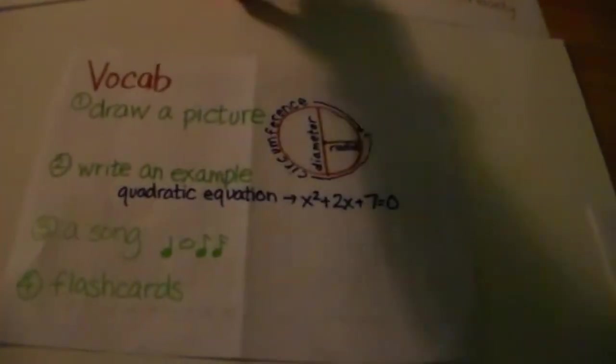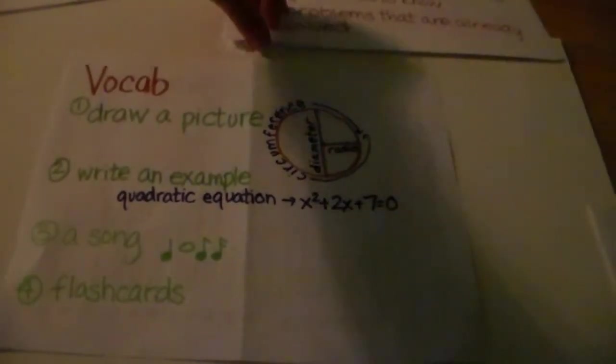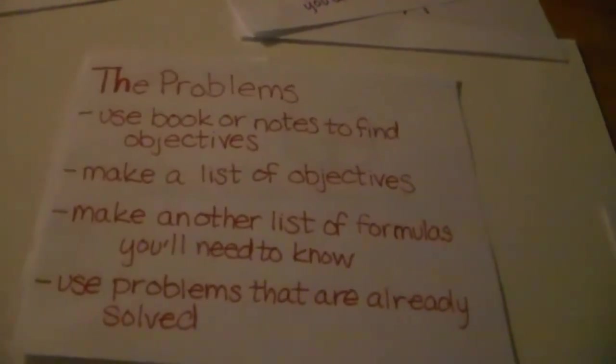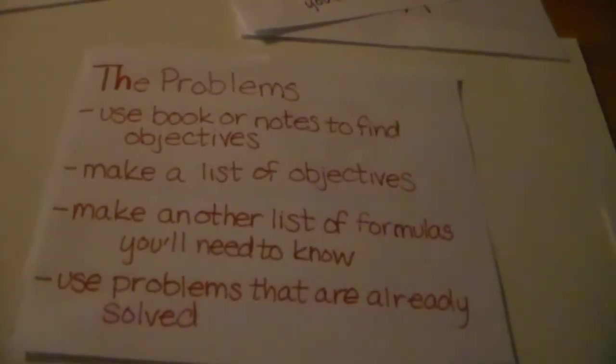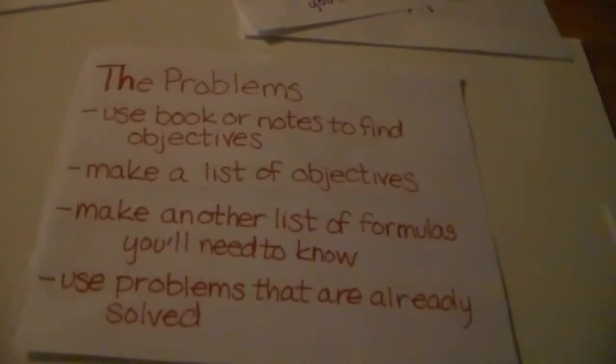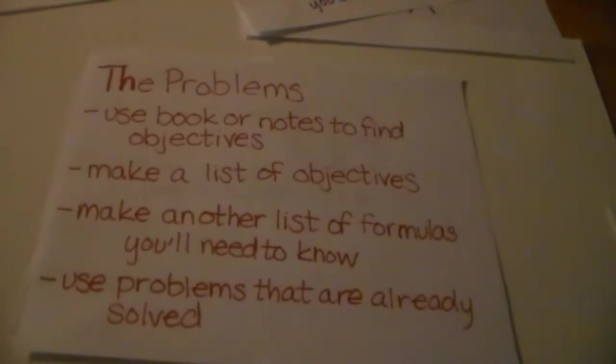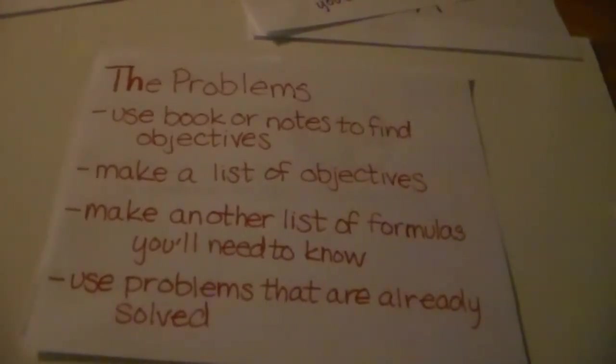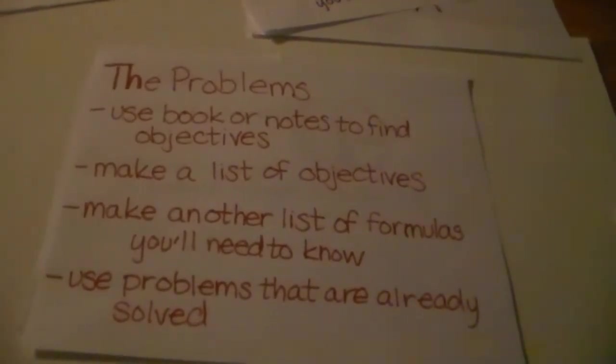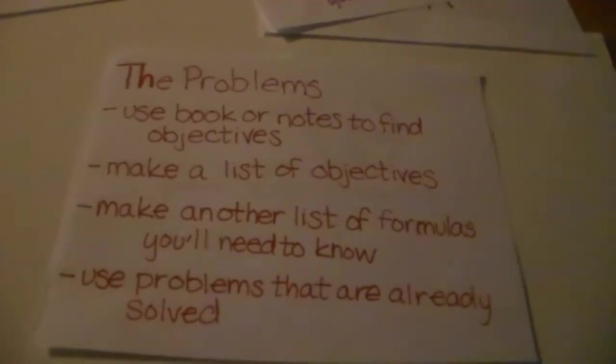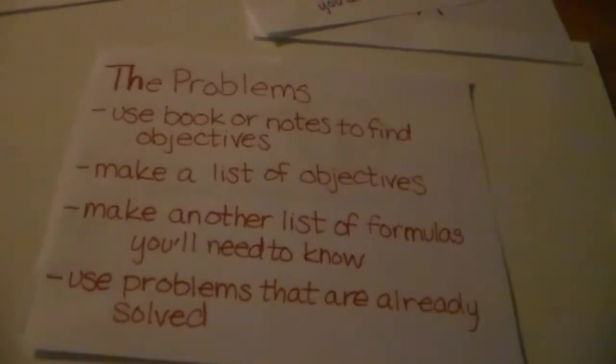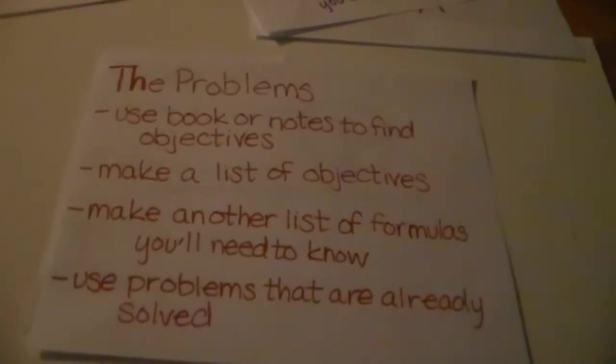Many times though, you will need to do problems. For this, you should use your notes or the textbook. I suggest using the book or your notes to find out what the objectives are. What is it that you have to be able to do? Make a list of these objectives. Make a list of other formulas or procedures that you'll need to know. Maybe you need to know the quadratic formula. Maybe you need to know the slope formula. Make sure those are written down so you can review those as well.